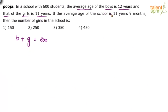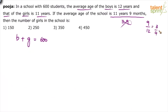The average age of the entire school is 11 years and 9 months. You have to first convert this to years. Don't say 11.9 years — that's nonsense. 11.9 years is not 11 years and 9 months. 11 years and 9 months is 11.75 years. To convert months to years, divide by 12. So 9 divided by 12 is 3/4, which is 0.75. Therefore, 11 years and 9 months equals 11.75 years.